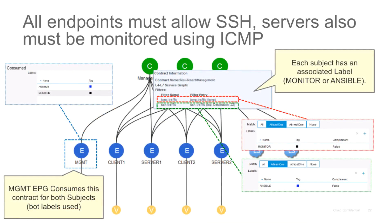In the APIC, this will look like this. We will have an application profile with Client1, Server1, Client2, and Server2 EPGs and contracts enabling communication between them. In addition, we will have the management contract that provides both filters — ICMP and SSH traffic — consumed by the management EPG. The management EPG is consuming filters that have the Ansible and the monitor subject labels. The ICMP traffic is matching the monitor label and the SSH traffic is using the Ansible label.